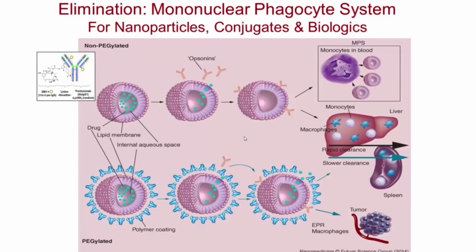The last type of elimination is a relatively novel form: cellular elimination via the mononuclear phagocyte system (MPS). This applies to complex drugs such as nanoparticle conjugates and biologics — meaning antibodies or antibody-drug conjugates. When an antibody or nanoparticle is administered, usually IV, it reaches the plasma and is cleared — not by metabolism — but by active cells including monocytes, macrophages, and other phagocytic cells that phagocytose and uptake the particles to remove them from the blood. This occurs in the liver, spleen, and through circulating monocytes.